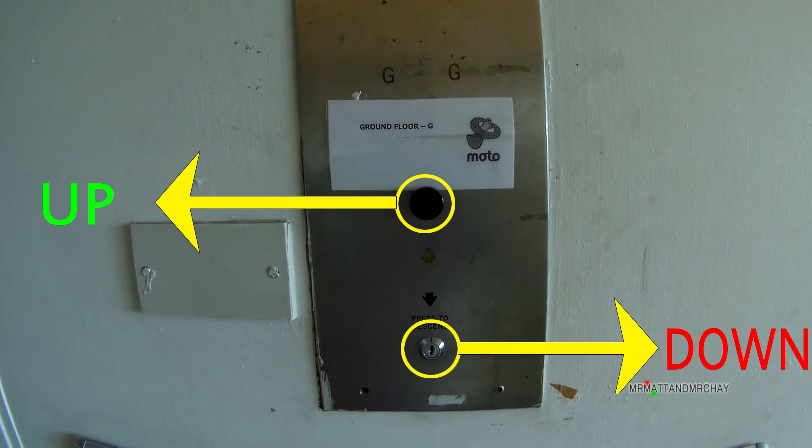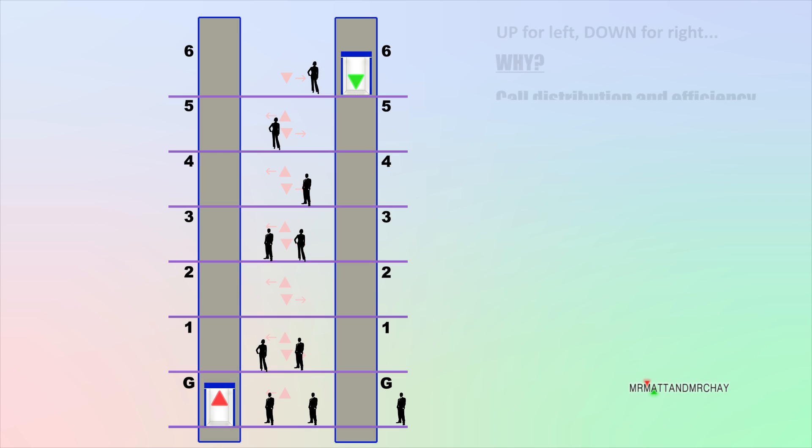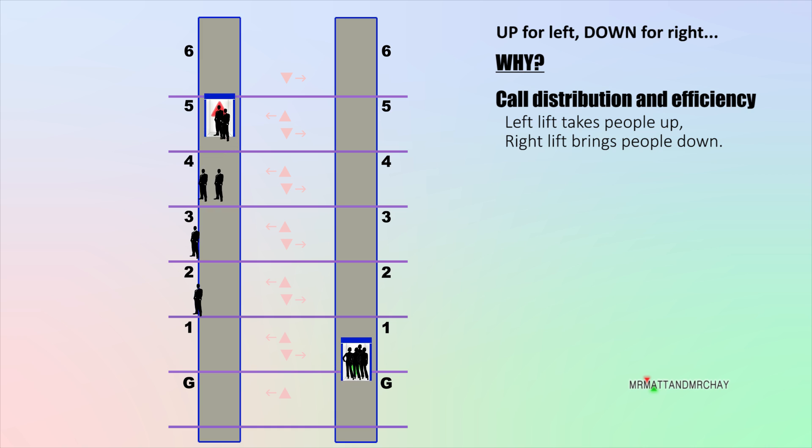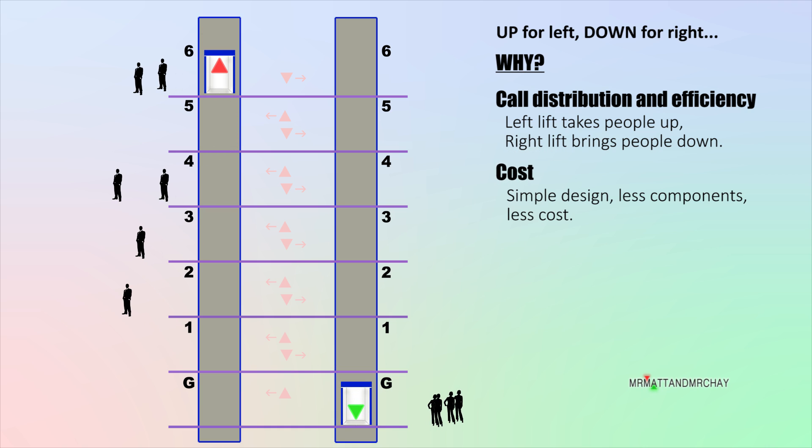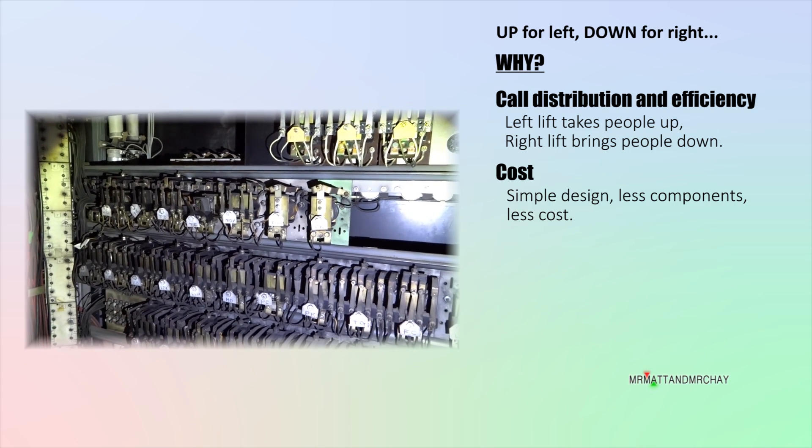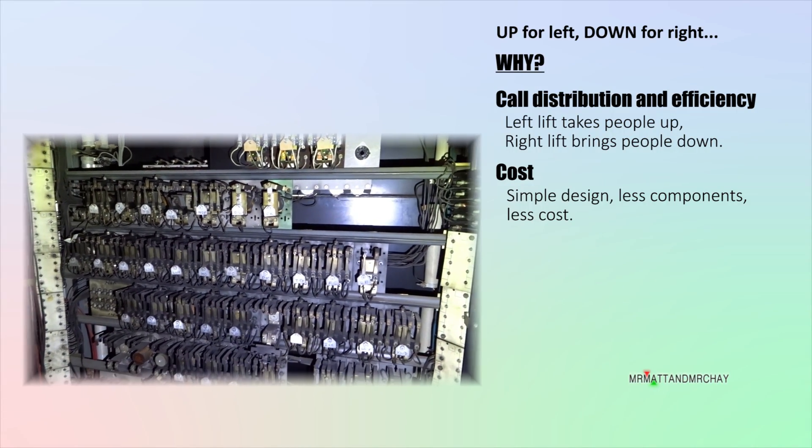But why? Splitting the call buttons between lifts gives each lift their own role. One lift takes people up and the other brings people down. The design tries to maintain a general flow of people traffic. This is a business. If you're competing for customers, it's not good business to price yourself out of the market. Less complexity means less components and ultimately less cost.